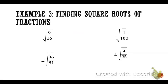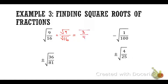Now what do you see that's different in the next example? A fraction. So when the entire fraction is under the square root symbol, in this section we'll see that both the numerator and denominator are perfect squares. That means I can take the square root of both of them — that's the same as the square root of 9 over the square root of 16. What's the square root of 9? 3. And the square root of 16? 4. So 3 over 4 is my answer.